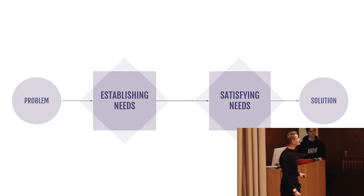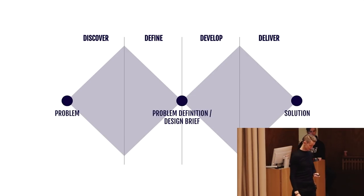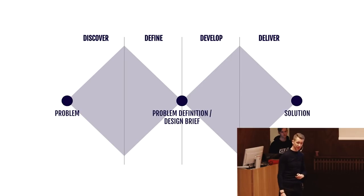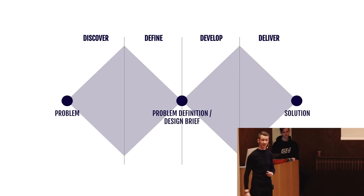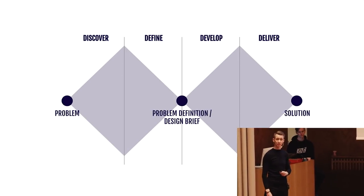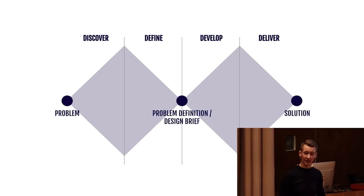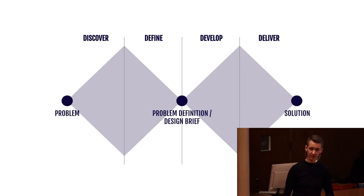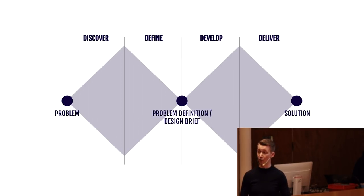If we tweak this a bit — turn those middle squares into something that resembles diamonds and zoom out — this is the Double Diamond, a very influential design process depiction by the Design Council introduced in 2014. You still have those two general phases: on the left, establishing the needs of the customer; on the right, thinking about how to satisfy those. These are broken down into four distinct steps: discovering, defining, developing, and delivering.